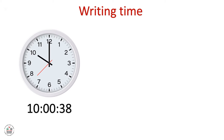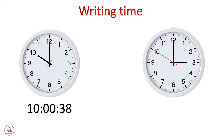On the second watch, the short hand is on 3, so we write 03 and the hour is 3. The longer hand is on 12, so we write 00. The red hand indicates 10, so we write 50. The time indicated is 3 hours, 0 minutes, and 50 seconds.